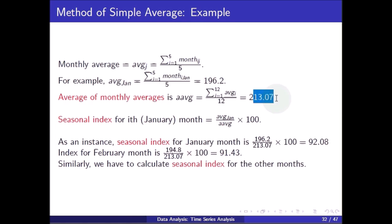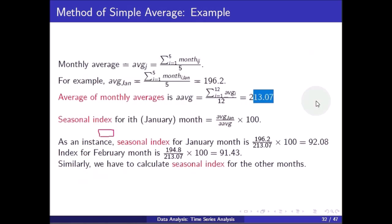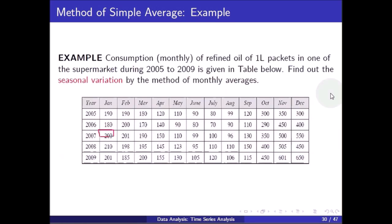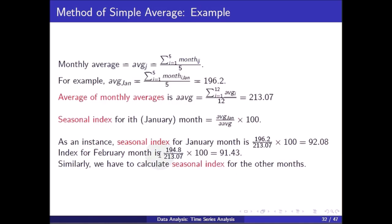So 213.07 is the AAVG — the average of monthly averages. To calculate the seasonal index for January: (196.2 / 213.07) × 100 = 92.08. So 92.08 is the seasonal index for January, 91.43 is the seasonal index for February, and 220.59 is the seasonal index for December. For February: (194.8 / 213.07) × 100 = 91.43. Similarly we calculate the seasonal index for all other months.